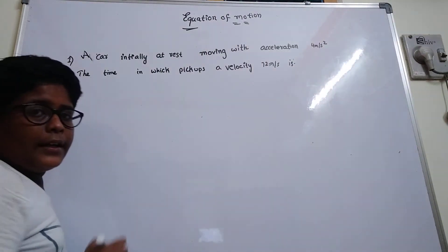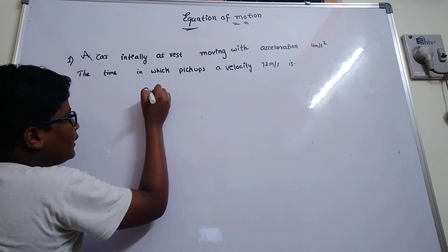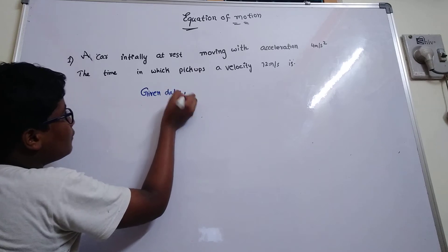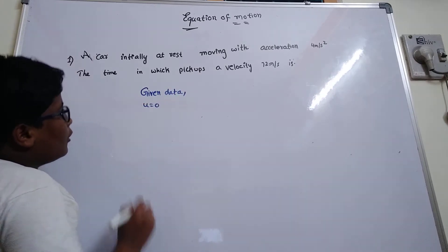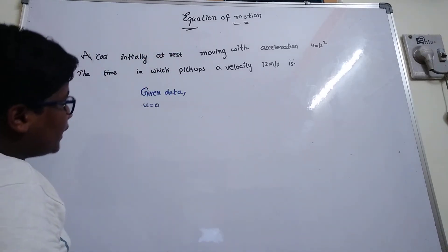Here, we will write the given data. Given data, what are they? U equals to zero, I told. Here, initially at rest, I told. Then,